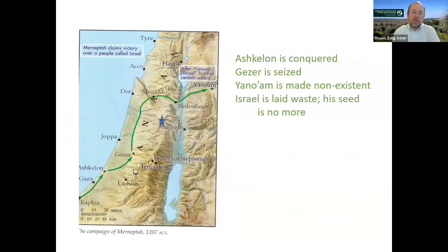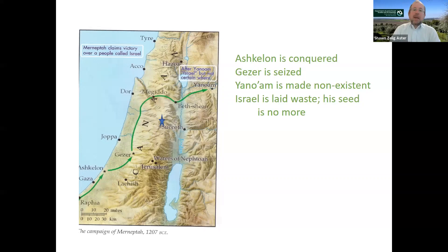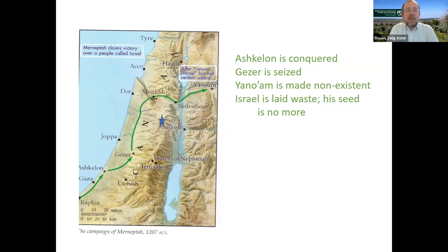Regarding where Merneptah actually fought the Israelites: the reconstruction of his route puts him running through the valleys — almost no Egyptian kings of this period go into the hill country. The Israelites probably came down from the hills and interacted with Merneptah at the edges of the valleys, which is probably where he encountered and fought them.